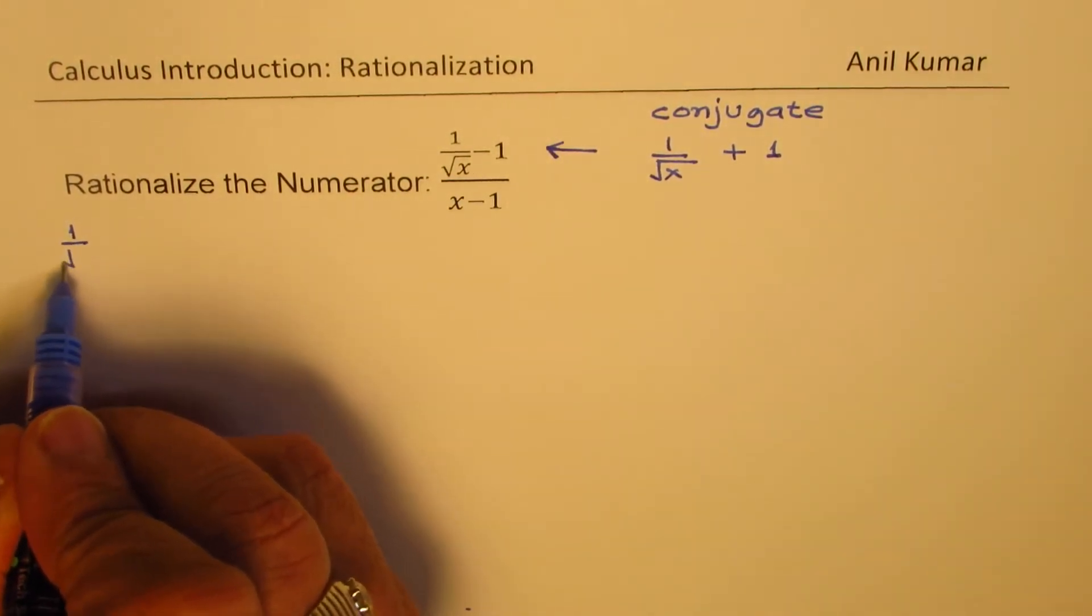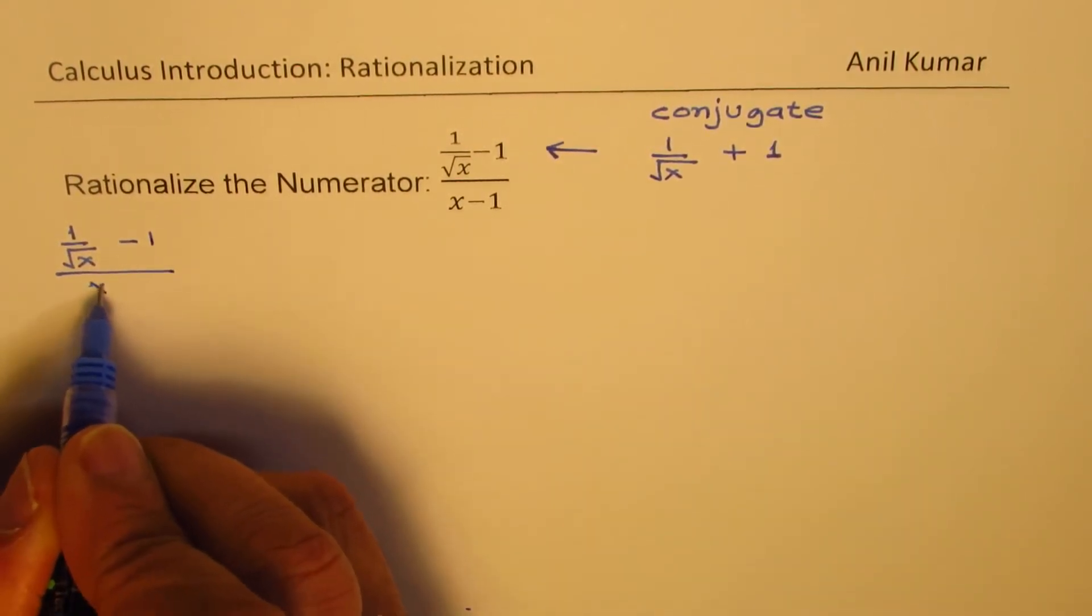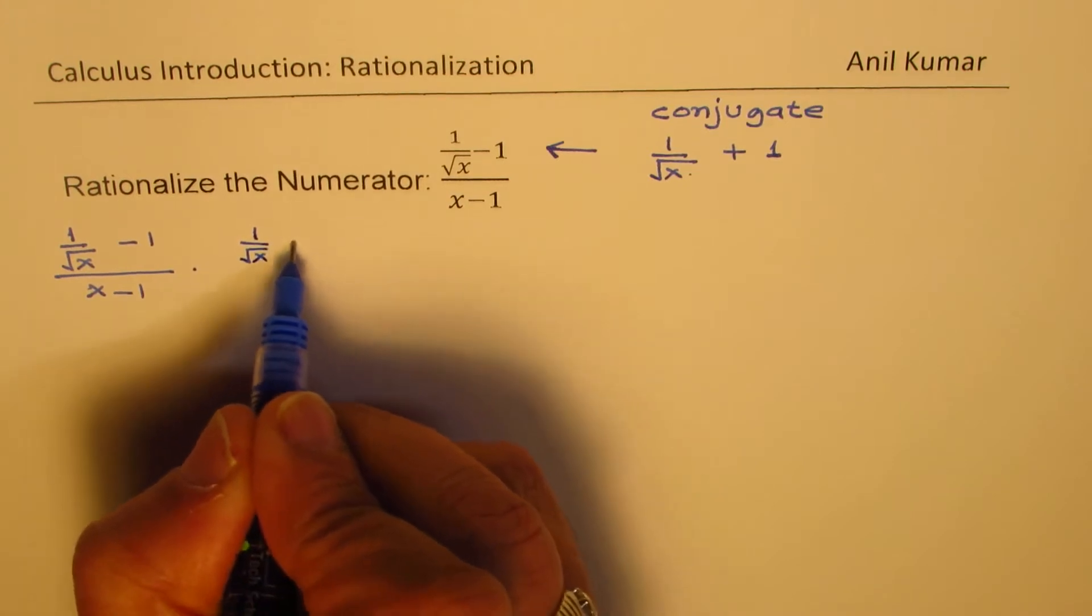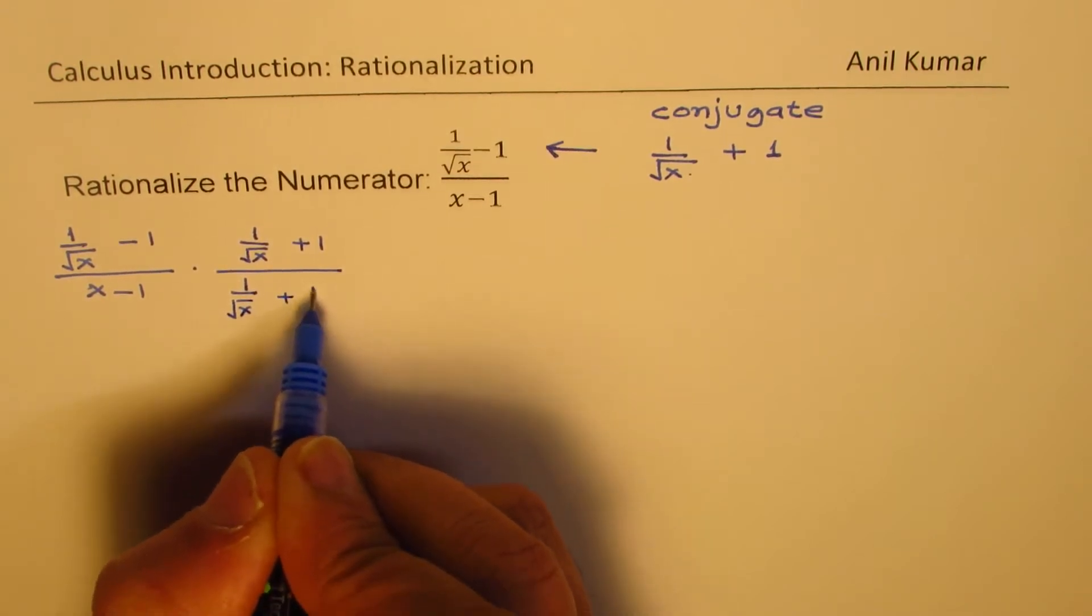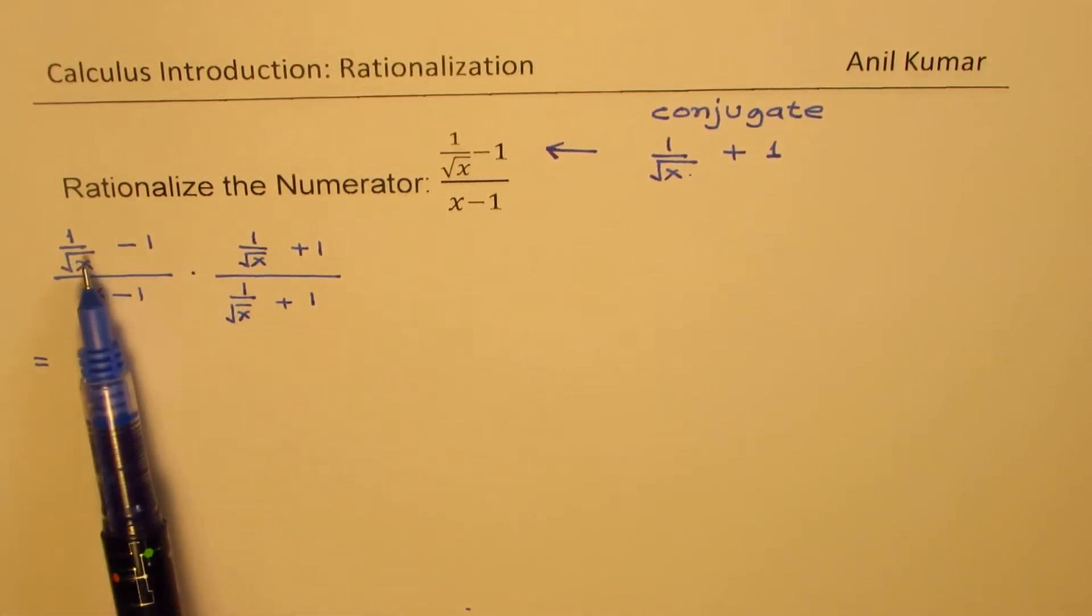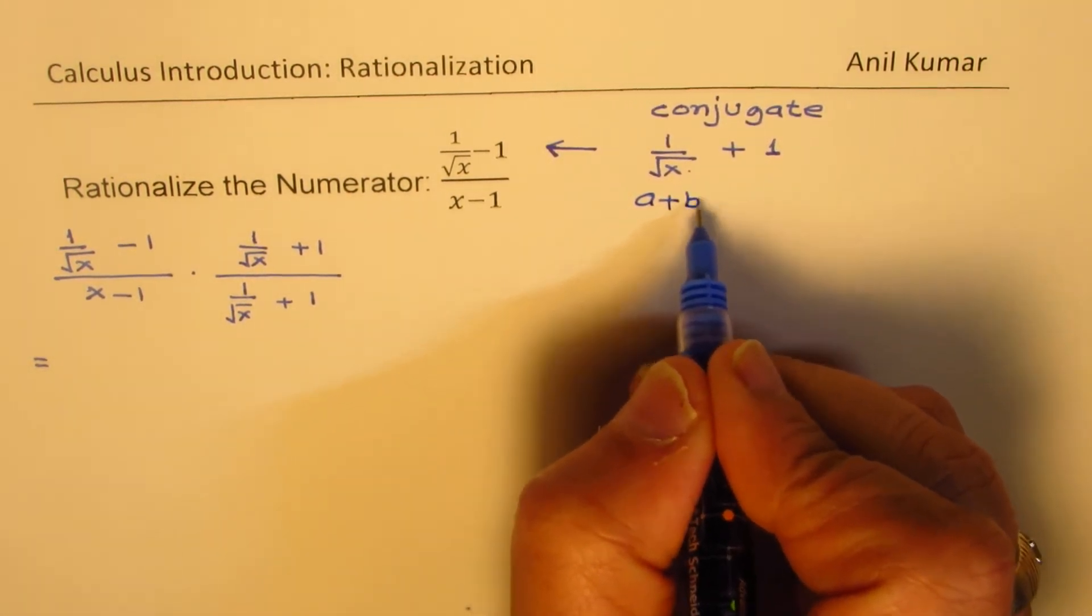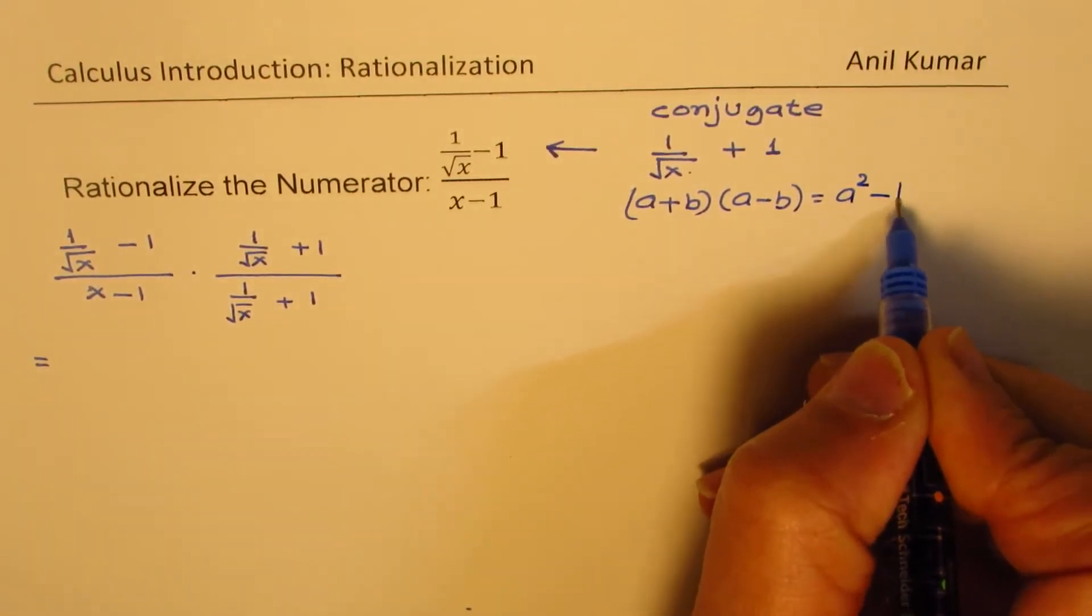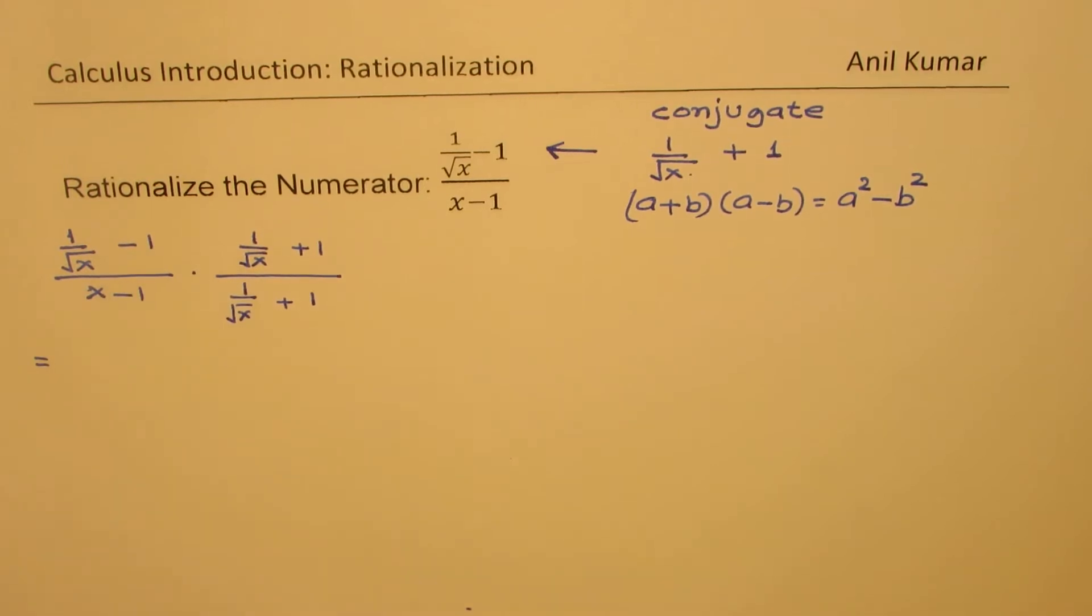We have our function which is 1 over square root of x minus 1, over x minus 1. We'll multiply and divide by this conjugate, which is 1 over square root of x plus 1. Now, when you do this, in the numerator what we get is a minus b times a plus b. When you multiply, you get a square minus b square.